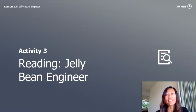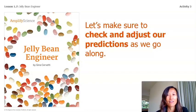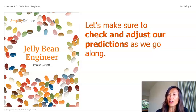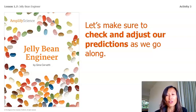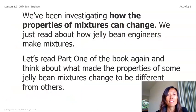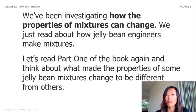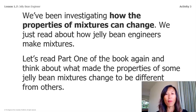Activity 3: Reading 'Jelly Bean Engineer.' Now let's read 'Jelly Bean Engineer' together. Since you don't have the book at home, you can follow along as I read. We'll make sure to check and adjust our predictions as we go along. We've been investigating how properties of mixtures can change — let's read Part 1 again and think about what made the properties of some jelly bean mixtures different from others.